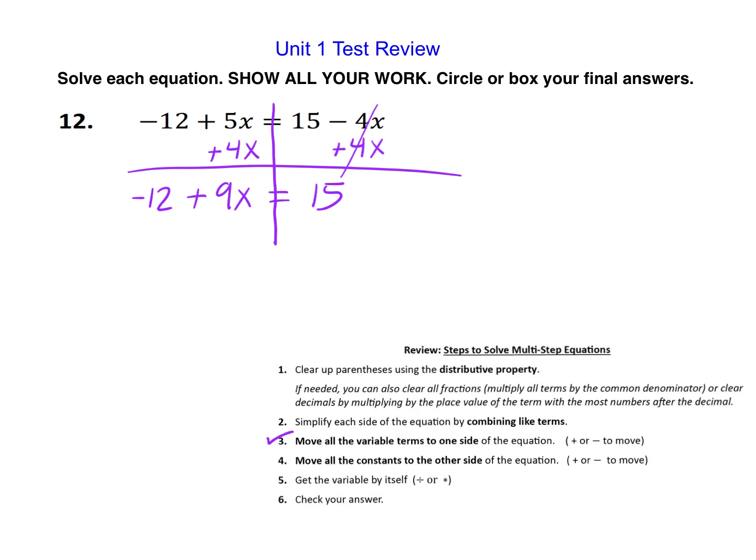So we can go on to step four, move the constants to the other side. Let's move that negative 12 by adding 12. That way it'll zero out on this side, leaving 9x alone equals 27. Then we'll finish it up by dividing by 9 to get x equals 3.